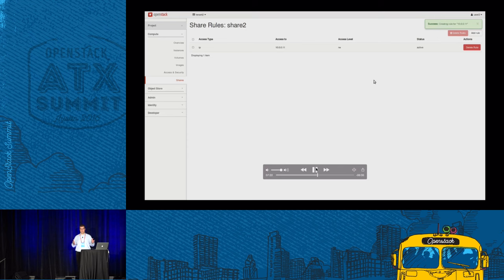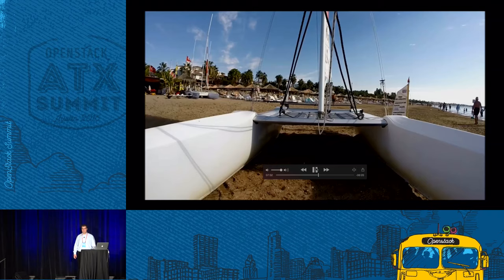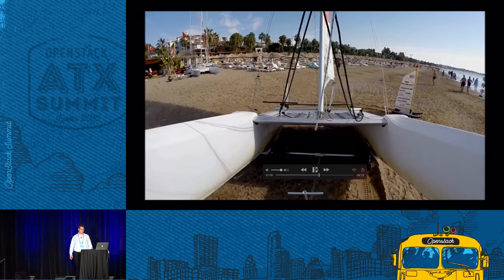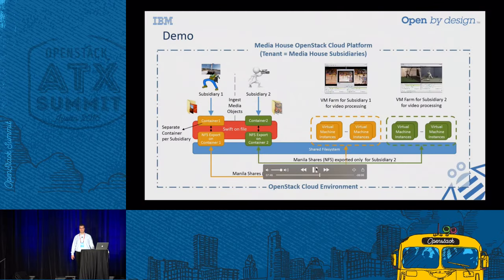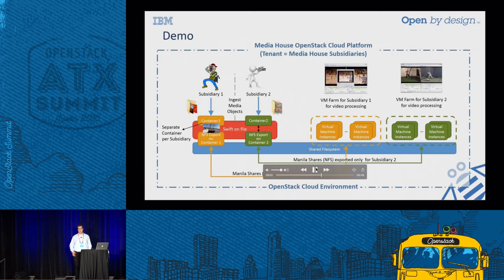Basically our system is now set up. Let's have some demo footage that we upload into our object store. This is a catamaran journey where I nearly flipped the cat — here's where we brought it into the water. So this footage is now uploaded into our object store, into container1. We used user1, tenant1, and uploaded video1.mp4 into container1. That's an example of how to do it — it could be done with any Swift client or S3 client. I could have even done it on the boat with a mobile connection.